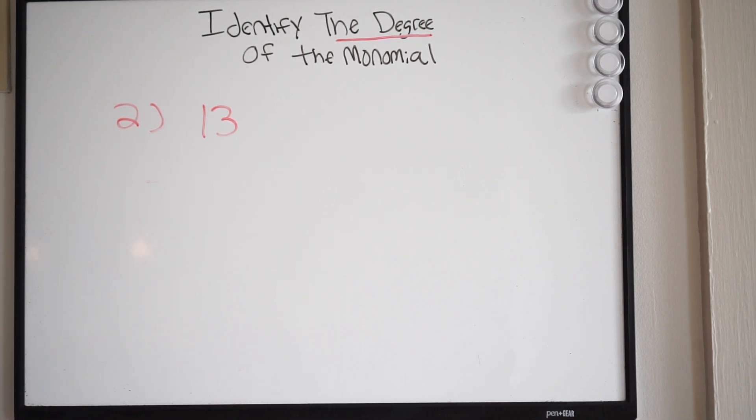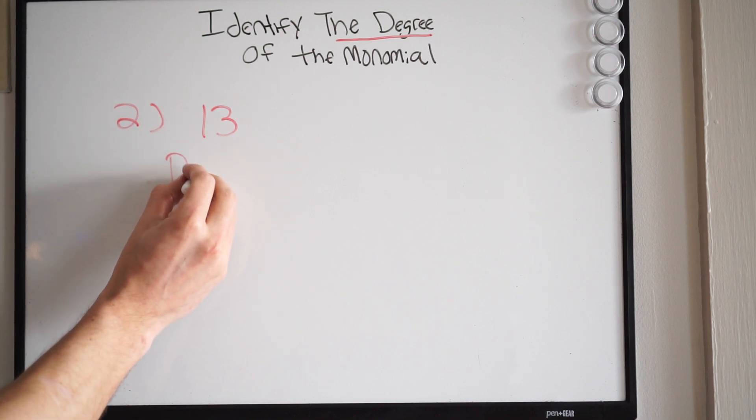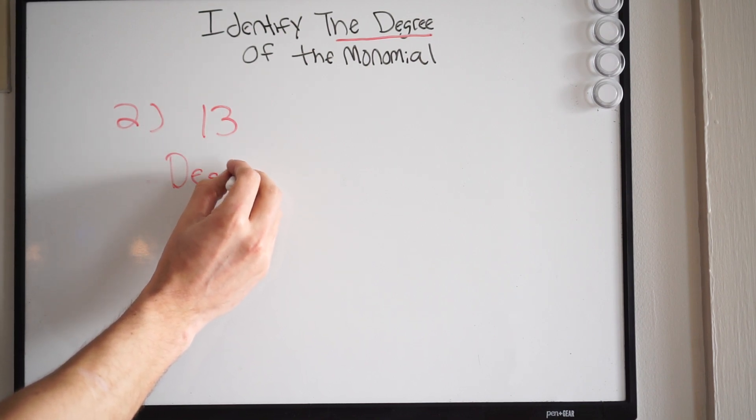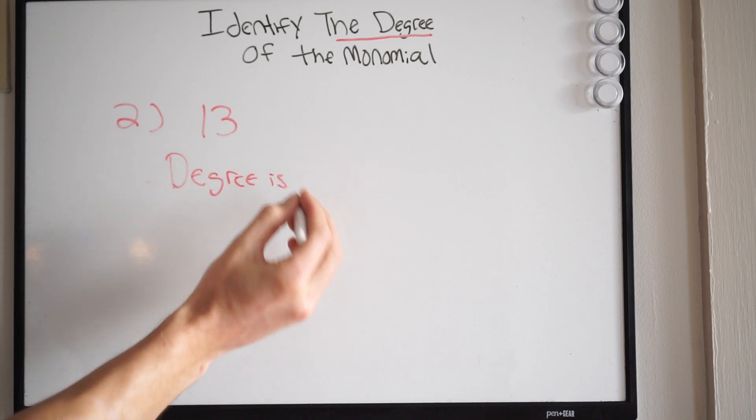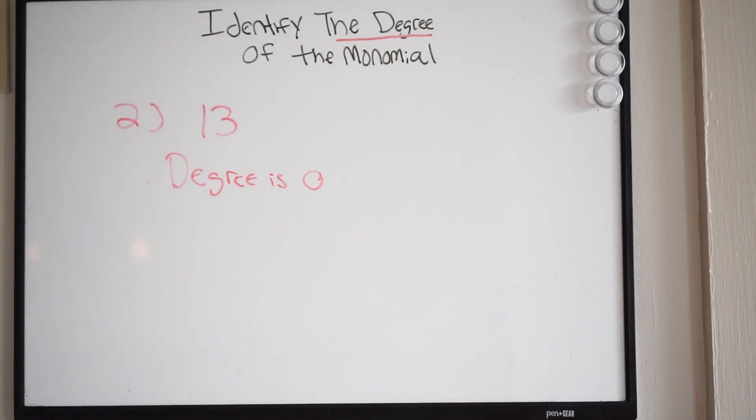What is going to be the degree of that monomial? Well, remember, we're looking at the variable here. Our coefficient, the variable. So as a result, we have no variable here, alright. So the degree here, the degree is 0. Okay, so the degree here would be 0. Alright, let's move on to another problem.